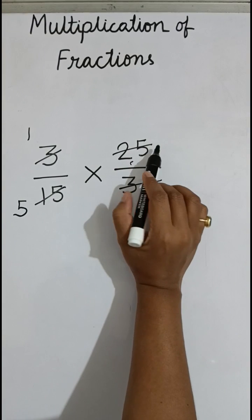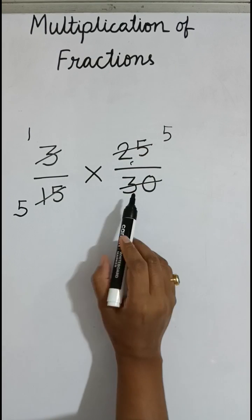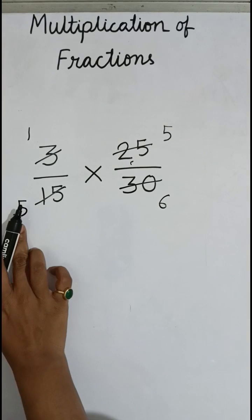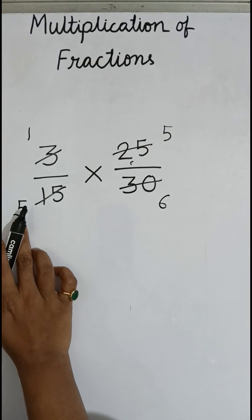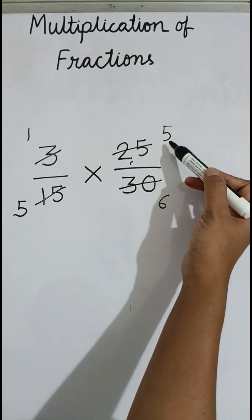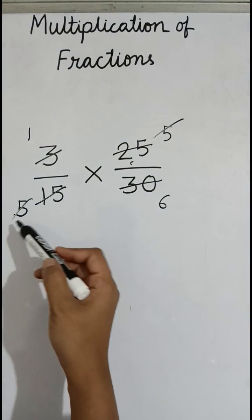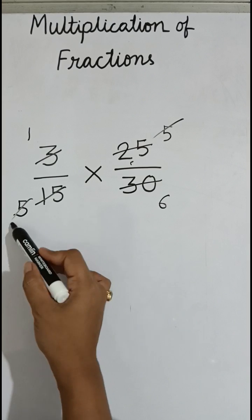Now here is also 5 in the denominator place, and here also 5 in the numerator place. So we can cut these numbers. Same numbers we can cut with 5. So 5 divided by 5 is 1, and 6 divided by 1 is 6.